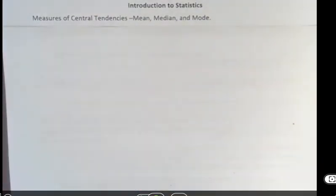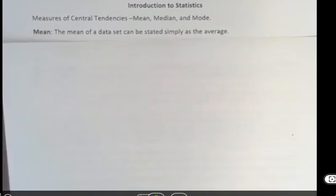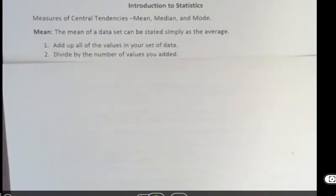This is a very brief introduction to statistics that you might need if you're just looking at a data set and want to do some simple things with it. The mean of a data set can simply be stated as the average. You may remember to find the average you add up all the values in your data set and divide by the number of values you added.